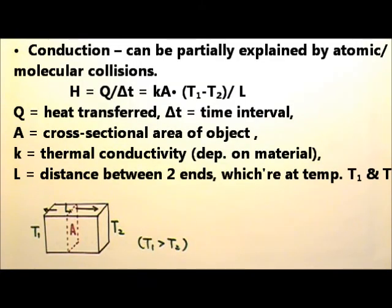Conduction can be partially explained by atomic molecular collisions. Suppose this is a wall between two temperatures, T1 and T2, and suppose that T1 is higher than T2. So on average, the particles over here have more kinetic energy than the particles on the other side. So through collisions, the higher kinetic energy would transfer to the particles in the neighboring layer of material, and that's conduction.